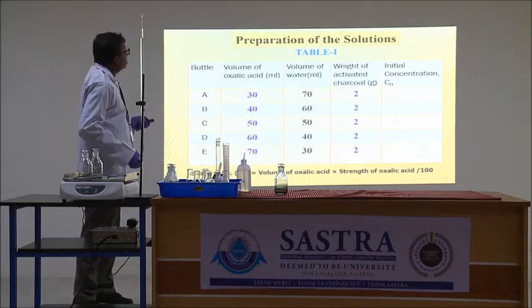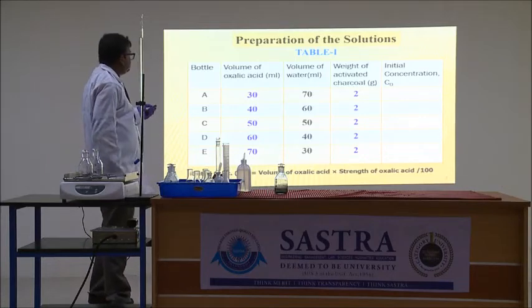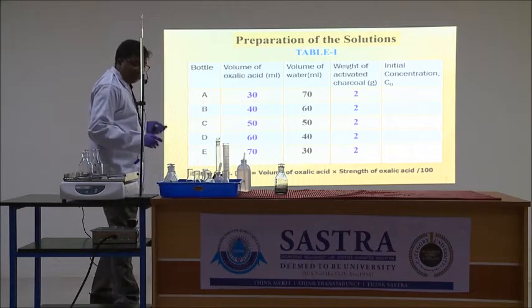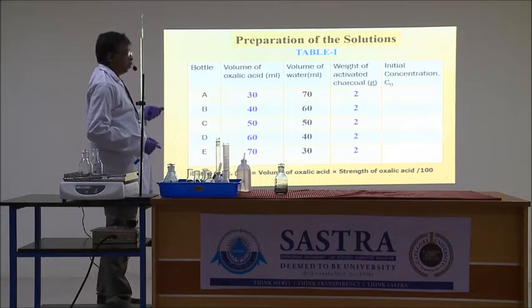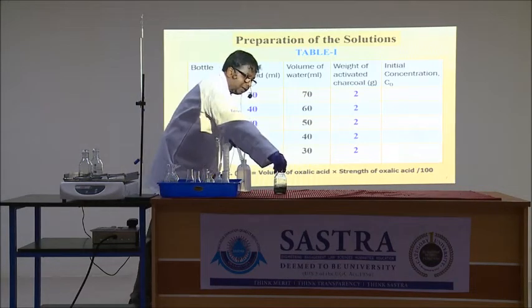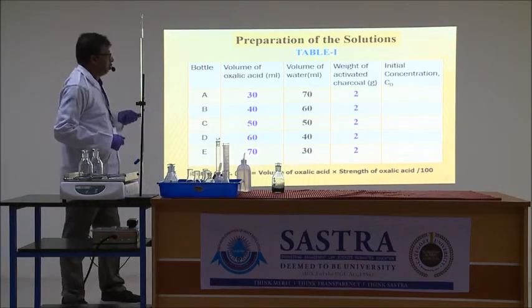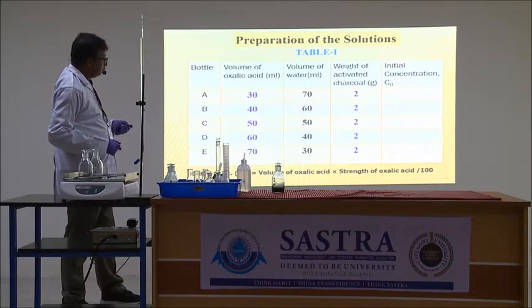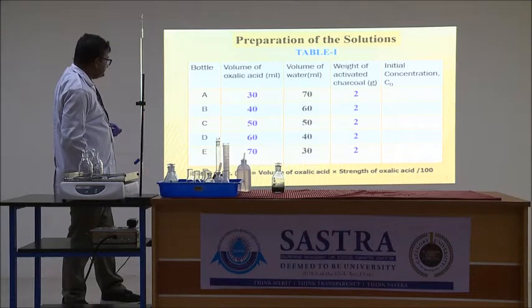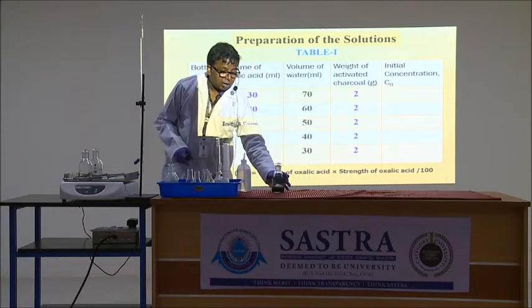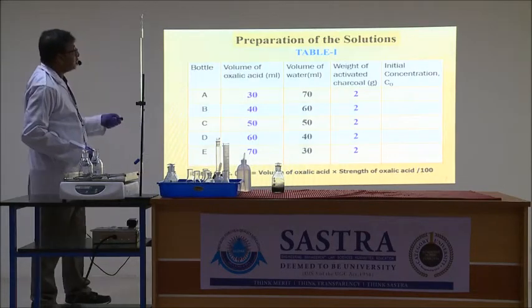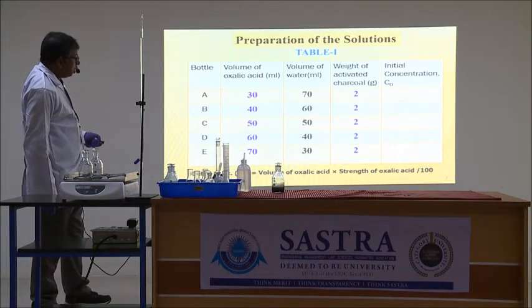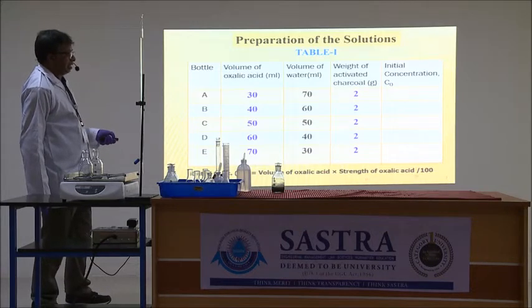Now let us see how to prepare the solutions. We will prepare five solutions of oxalic acid with different concentrations using the five stopper bottles. In bottle A, we add 30 ml of oxalic acid and 70 ml of distilled water. In bottle B, we add 40 ml of oxalic acid and 60 ml of distilled water. Likewise, we prepare solutions C, D, and E. After that, we calculate the initial concentration C₀ using the formula: C₀ = (volume of oxalic acid × strength of oxalic acid) / 100.